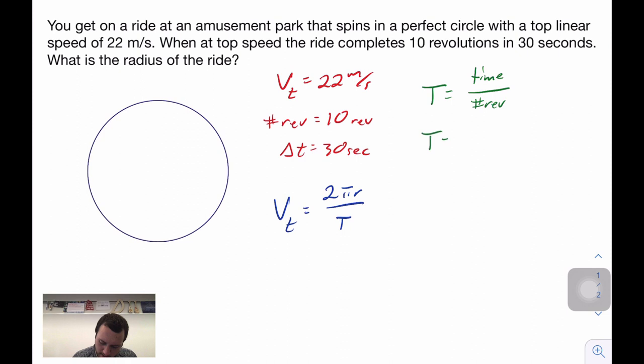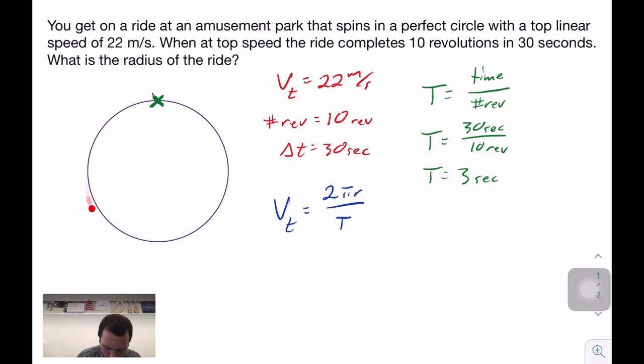So our time period is going to be 30 seconds per 10 revolutions or 10 cycles to get us a period of 3 seconds. So it takes 3 seconds if we start at the top of the circle here to go from the beginning of that circle all the way around and back is going to take 3 seconds. Thus, why 10 cycles takes 30 total seconds to get around.